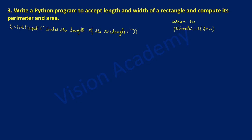We close the bracket and then use another variable called w, also of type integer. We will ask the user to input — in double quotation marks — enter the width of the rectangle.